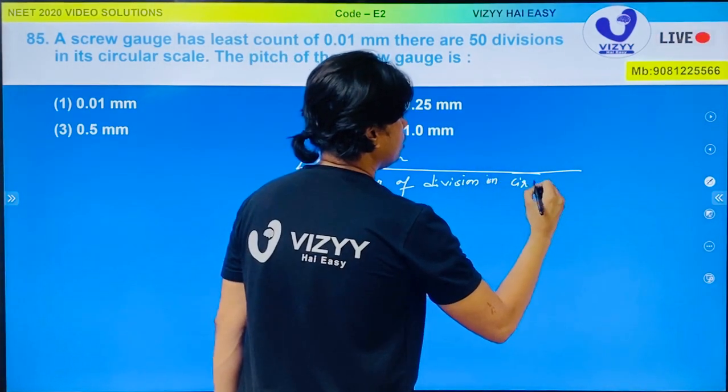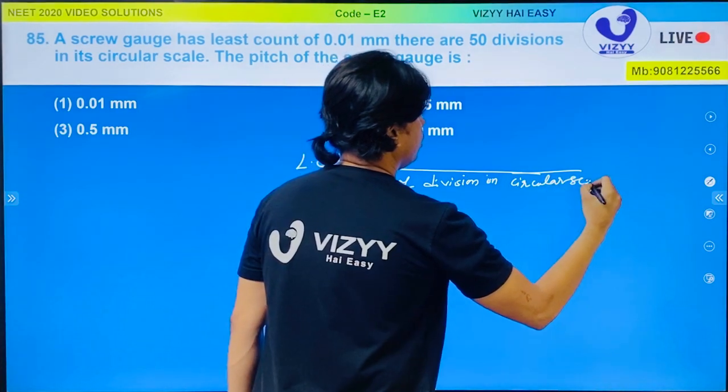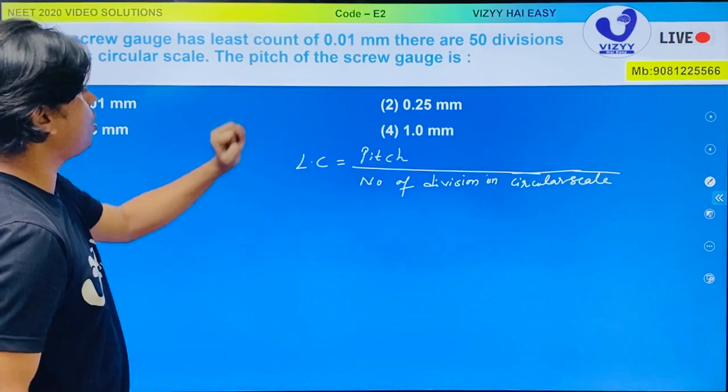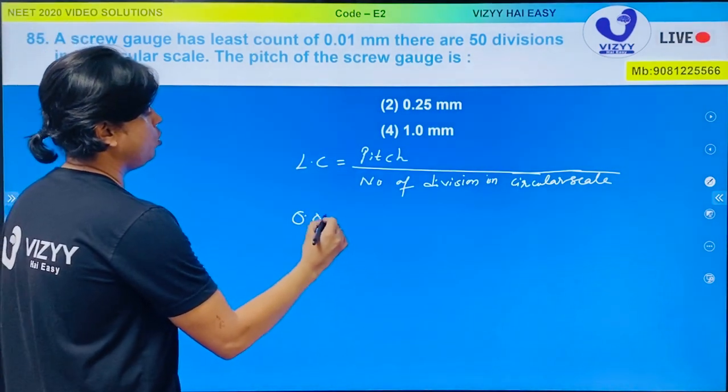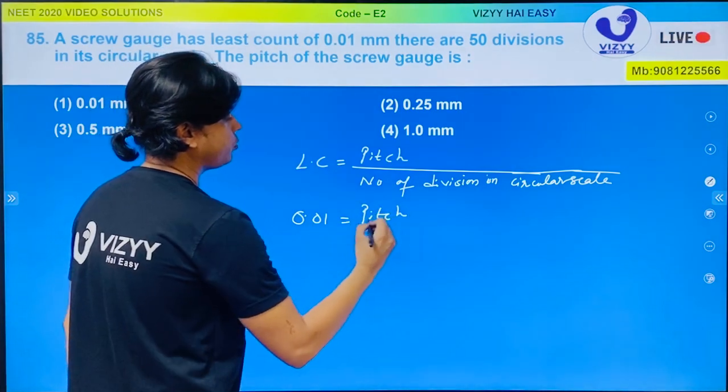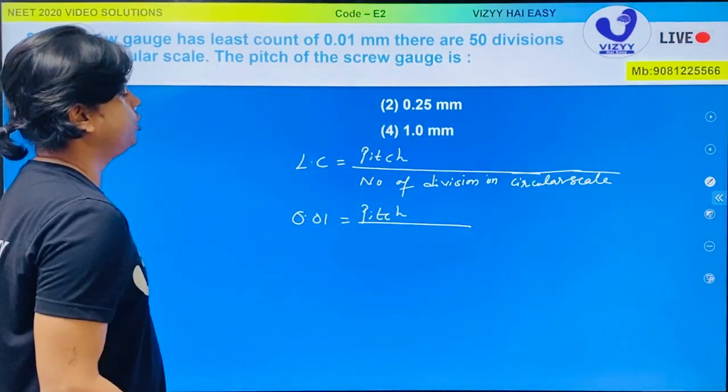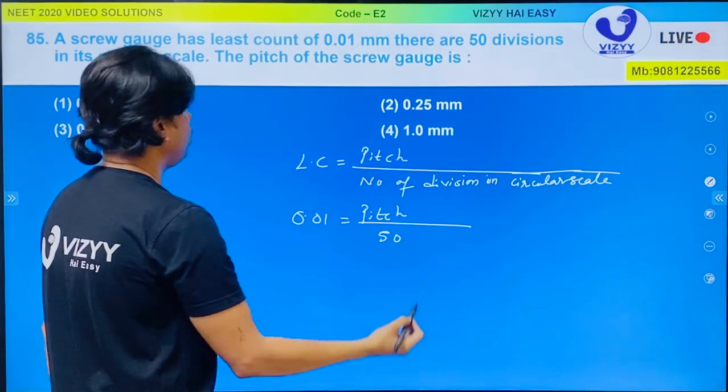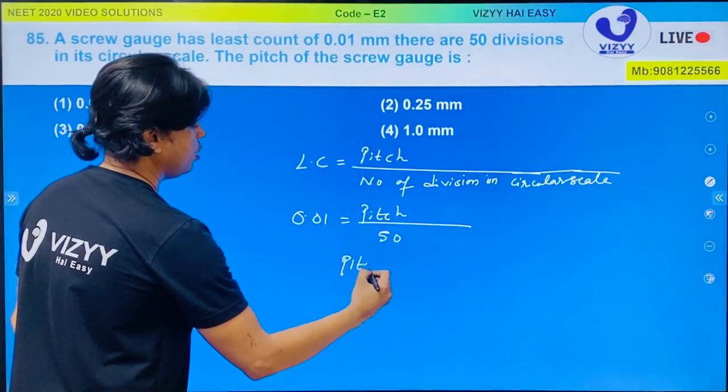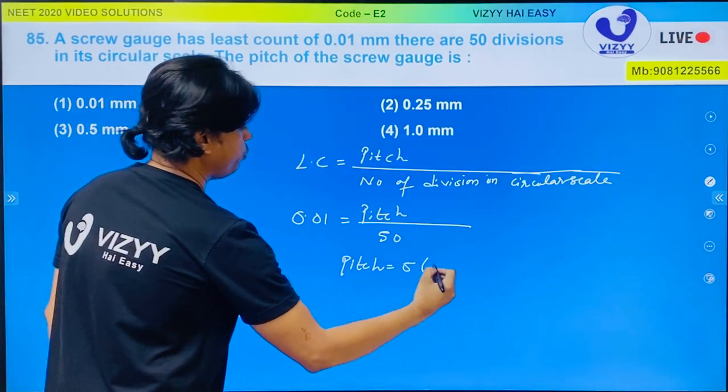In this case least count is given which is 0.01 mm. You need to find out pitch and number of divisions is 50. So answer comes out to be pitch is 50 into 0.01.